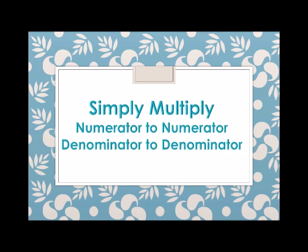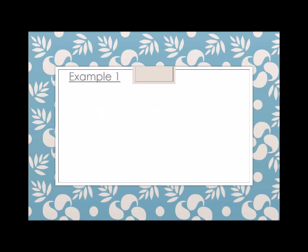Simply multiply numerator to numerator and denominator to denominator. So if you're going to multiply fractions, just multiply the numerator and the denominator. Let's have an example. Example number one: we have one-half times one-fifth.